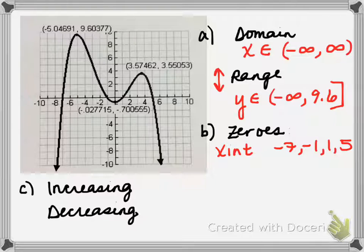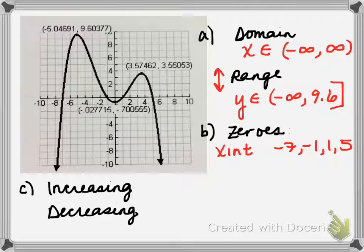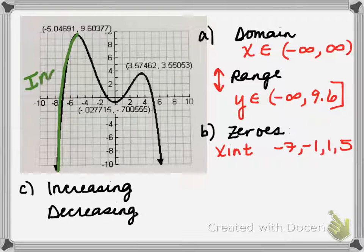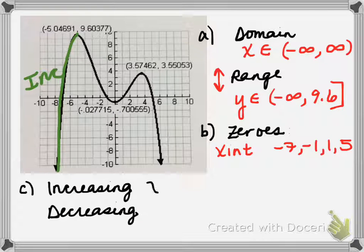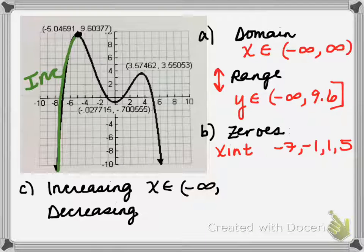Next, we're interested in where the graph is increasing and decreasing. The graph is increasing when the y values are getting larger, and we read the graph from left to right. Starting on the left-most part of the graph and traveling left to right, the y values are getting larger, so the function is increasing for this interval. When you give answers for increasing, you give the x-intervals. So the function is increasing for all values of x from negative infinity to this high point, where the graph changes to decreasing — and the x value at that point is about negative 5.